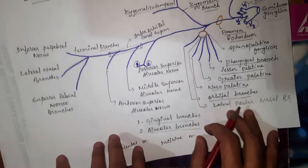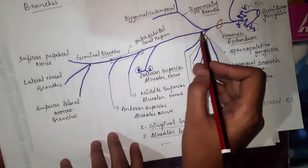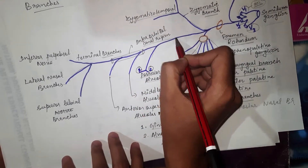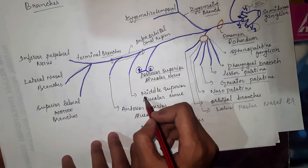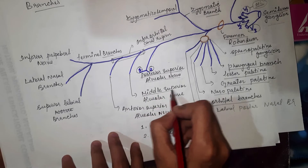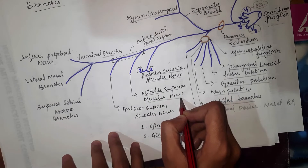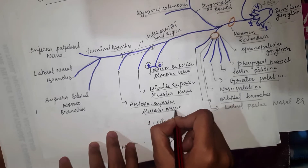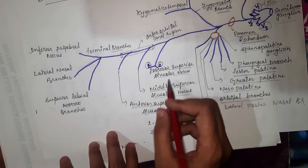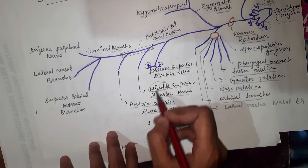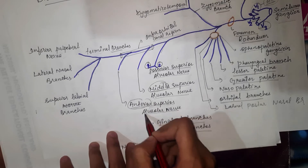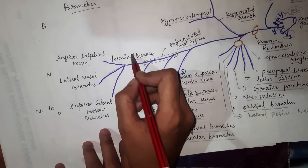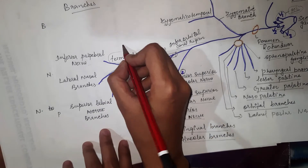The nerve then enters into the infraorbital canal and gives one branch called the medial superior alveolar nerve and one more branch called the anterior superior alveolar branch. Then the terminal branch supplies the face.